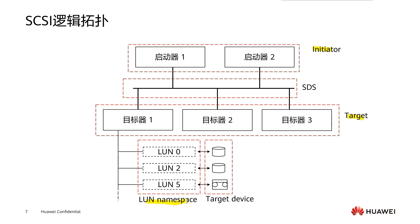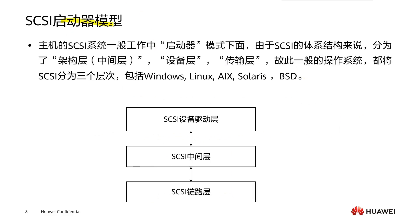The SCSI logical topology includes three parts: initiator, target, and logical unit. A logical unit (LUN) is the namespace resource described in the SCSI target. A target can contain multiple LUNs, and the attributes of each LUN can be different — for example, LUN 0 can be a disk while LUN 2-5 can be other devices. SCSI is essentially a client-server architecture where the client is called the initiator, responsible for sending request instructions to the SCSI target. The target's main function is to receive and process instructions from the host; for example, the role of the disk array is the target.